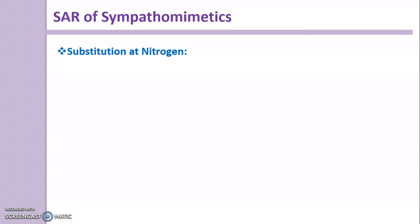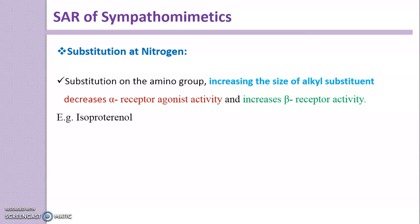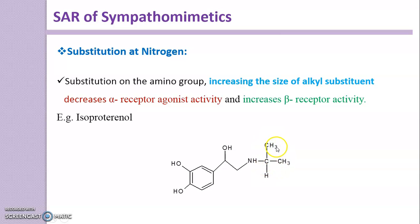Now, substitution at nitrogen. Increasing the size of the alkyl substituent on the amino group decreases alpha receptor agonistic activity, but at the same time increases beta receptor activity. Example: Isoprenaline, which has an isopropyl group. Because of this larger alkyl substituent, it has very good beta receptor activity — binding to beta receptors and eliciting activity — but decreased alpha receptor agonistic activity.